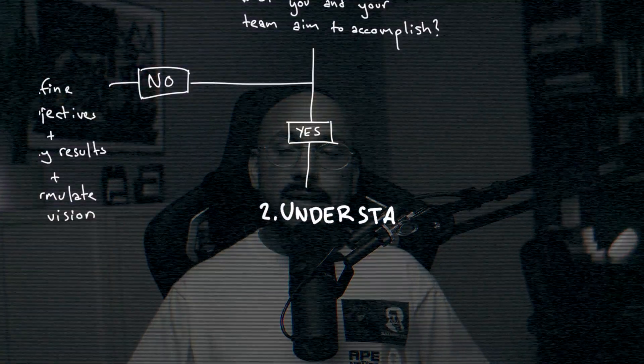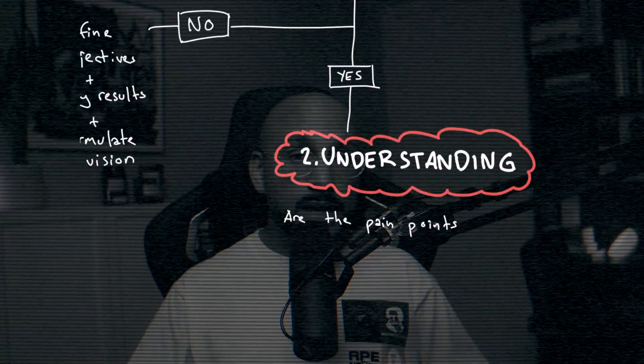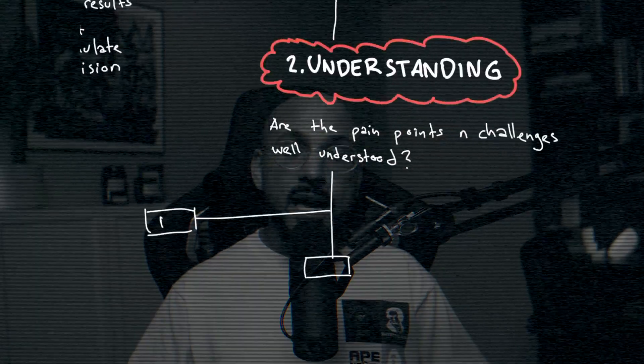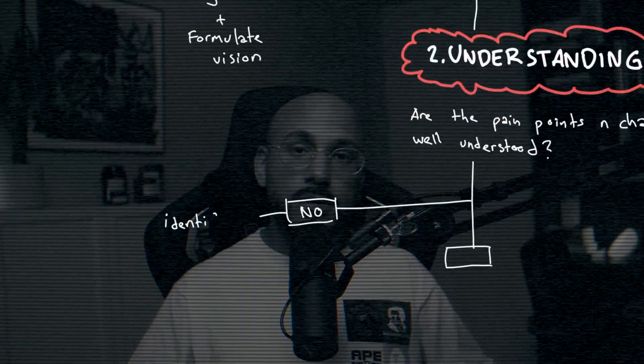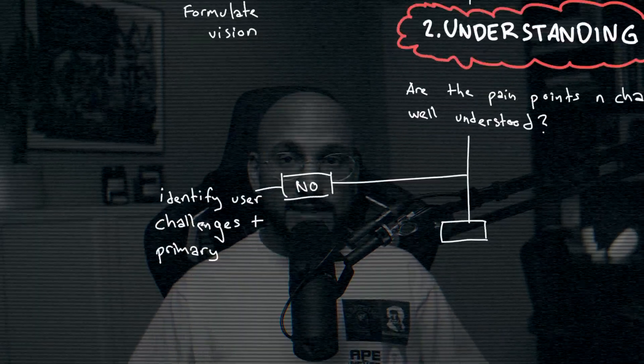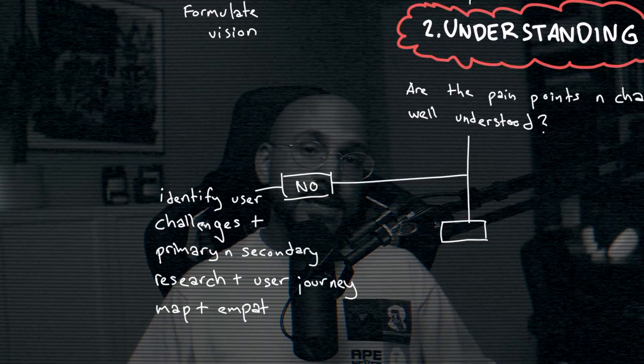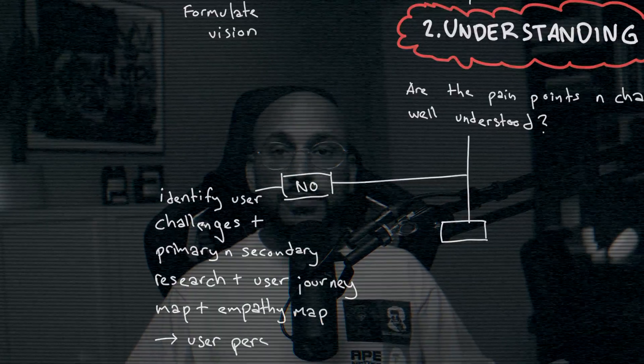Two: understanding. Are the pain points and challenges well understood? If not, start by identifying the user challenges. By doing primary and secondary research, you'll have enough insights to create a user journey map, an empathy map, and user personas. Interviewing people in the market, the users, members of the team, or subject matter experts will give you super valuable information.